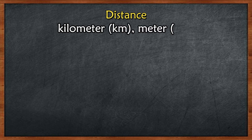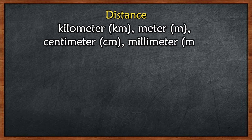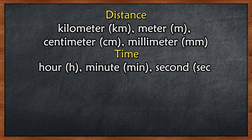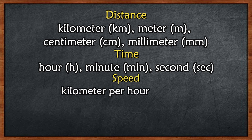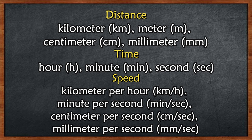Here are some units of measurement we are going to use in our lesson. The units of measurement of distance are kilometer, meter, centimeter, and millimeter. The units of measurement of time are hour, minute, and second. The units of measurement of speed are kilometer per hour, meter per second, centimeter per second, and millimeter per second.